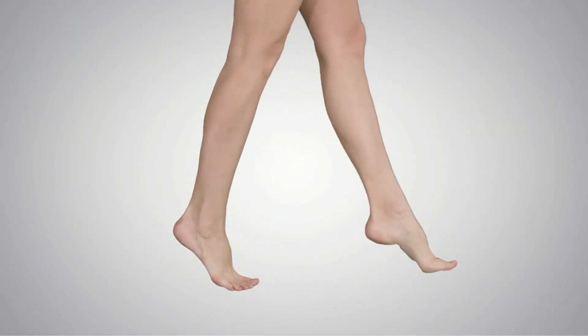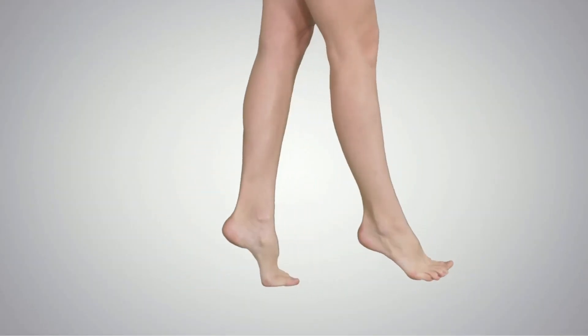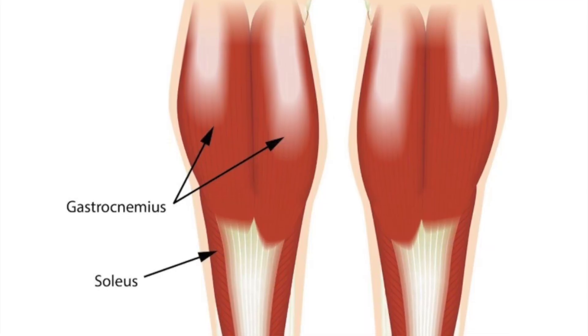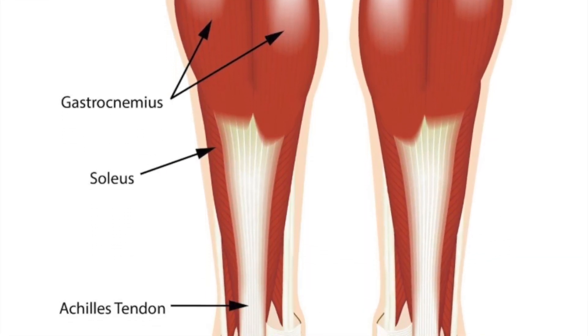First things first — what is toe walking? Toe walking is a pattern of walking where the person walks on their toes or the balls of their feet, and their heel never comes into contact with the ground. It's a common way of walking especially in children who are first learning how to walk, and it's typically outgrown by age two.